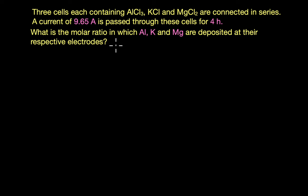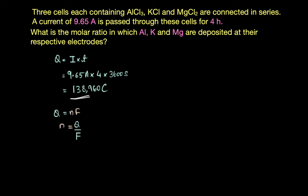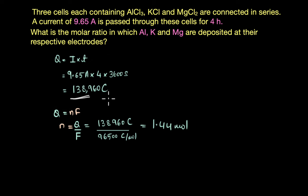Using the formula Q = I × t and substituting the values of current and time, we get the total charge passing through the cell. From this charge value, we can find the total moles of electrons using Q = nF, rearranged as n = Q/F. Dividing by Faraday's constant gives us 1.44 moles of electrons available to deposit aluminium, potassium, and magnesium.